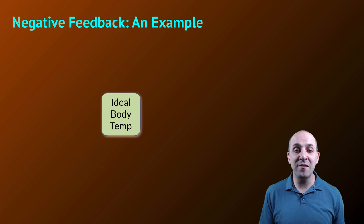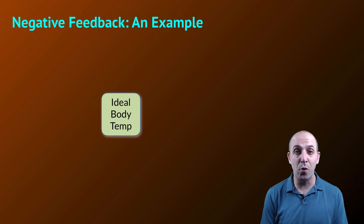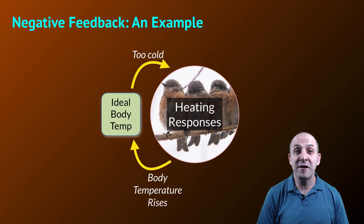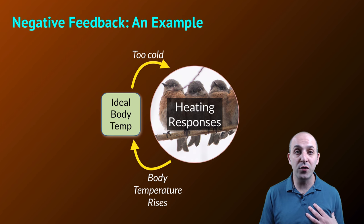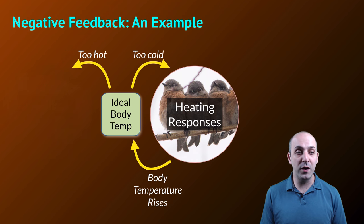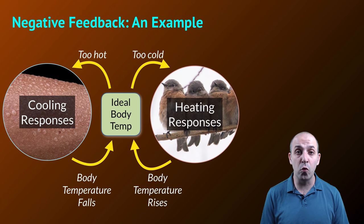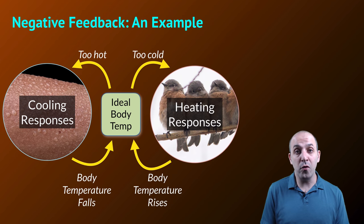As an example of negative feedback, let's look at how humans regulate body temperature. If we consider our ideal body temperature as a set point around 37 degrees Celsius or 98.6 degrees Fahrenheit, when we get too cold we engage in a variety of heating responses — huddling together for warmth, shivering of muscles, or seeking warmer areas. Assuming we accomplish this and don't freeze to death, our body temperature will rise. Of course, if we get too hot, we have cooling responses such as perspiration or other cooling behavior that will bring our temperature back down. This is classic negative feedback — the resulting actions from being too hot or too cold lead to a reversal in the system.